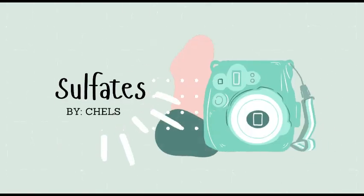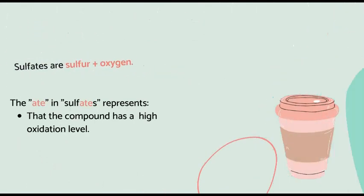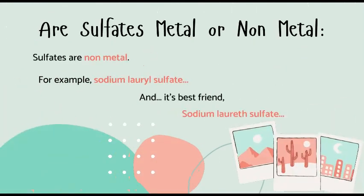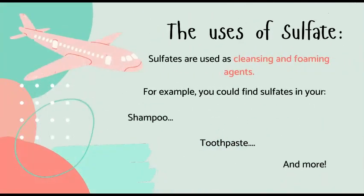Next topic: sulfates. How do you get sulfates? Sulfates are sulfur plus oxygen. The -ate in sulfates represents that the compound has a really high oxidation level. Are sulfates metals or non-metals? Sulfates are non-metal. An example of a non-metal sulfate would be sodium lauryl sulfate.